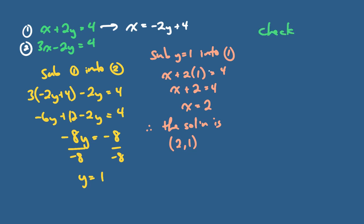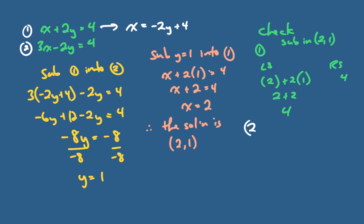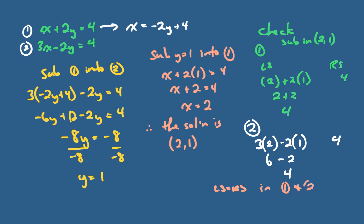Since you know how to check, let's verify quickly. I'm going to check whether the left side equals the right side in equation 1 by substituting the coordinate (2, 1): left side is x which is 2 plus 2y where y is 1, giving 2 plus 2 equals 4, which matches the right side. Checking in equation 2: left side is 3 times 2 minus 2 times 1, which is 6 minus 2 equals 4 — also the right side. Left side equals right side in both equations, so the solution is correct.